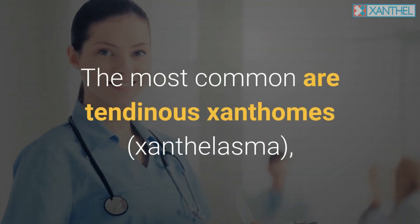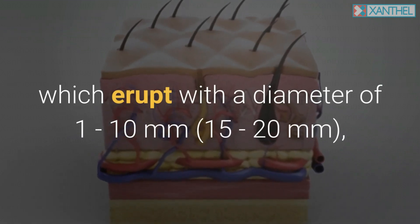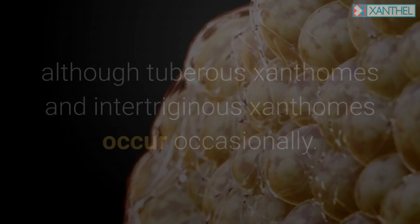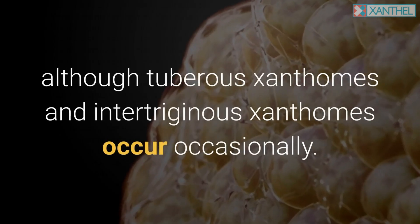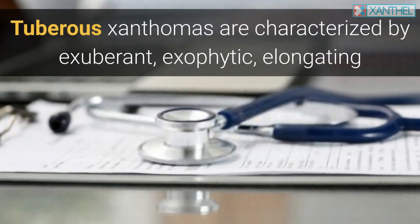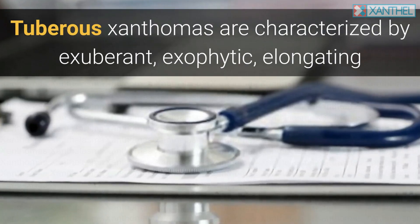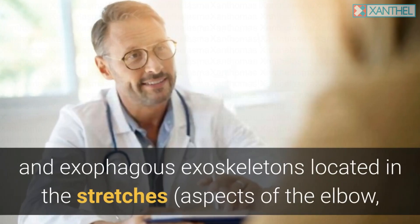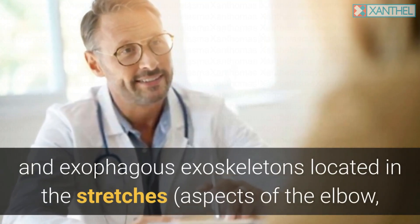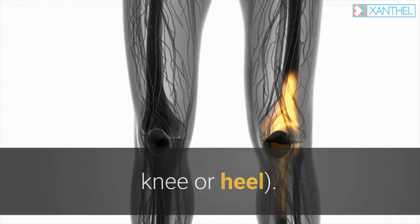The most common types are tendinous xanthomas and xanthalasma, which erupt with a diameter of 1 to 10 millimeters, although tuberous xanthomas and intertriginous xanthomas occur occasionally. Tuberous xanthomas are characterized by exuberant, exophytic lesions located in the stretch aspects of the elbow, knee, or heel.